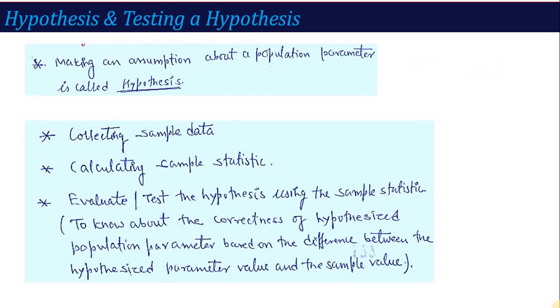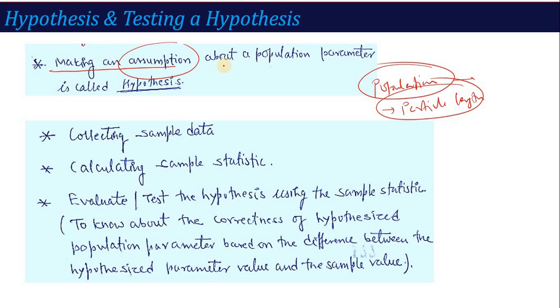Now we have talked about population and sample. The population may have some characteristics. Like the shopkeeper told that my rice has this characteristic, that the particle length is good. This is one of the characteristics. And you believed that the particle length is good. That is called an assumption. Making an assumption about a population parameter is called hypothesis.